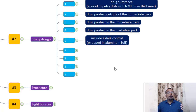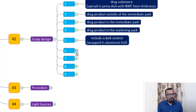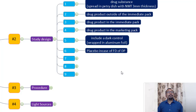If required, you can also include a dark control. The dark control is made by wrapping the drug product or API in aluminum foil so that UV or fluorescent white light never reaches the sample. The dark control is required if you want to understand the secondary impact due to oxidation or temperature inside the photostability chamber. In case of drug product, you also need to expose the placebo in addition to API and the drug product.